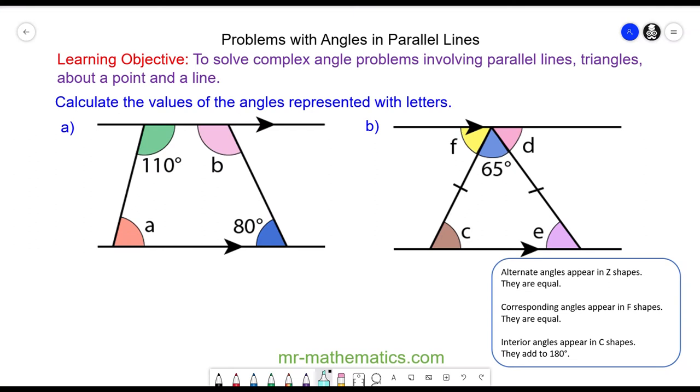Hello and welcome to our lesson on solving problems with angles in parallel lines. There are three angle properties we need to know to solve these problems. The first one is that alternate angles appear in a Z shape and these angles are equal. The next is that corresponding angles appear in an F shape and these are also equal. And the third angle property is that interior angles appear in C shapes and they add up to 180 degrees.